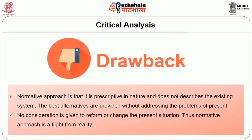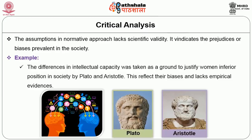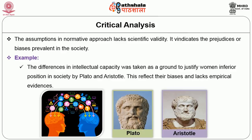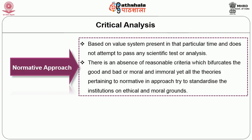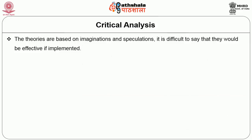The assumptions in the normative approach lack scientific validity. It vindicates the prejudices or biases prevalent in society. For example, differences in intellectual capacity were taken as grounds to justify women's inferior position by Plato, Aristotle and many others — reflecting their biases and lack of empirical evidence. Normative approach is based on a value system of a particular time and does not attempt to pass any scientific test. There is an absence of reasonable criteria which bifurcates the good and bad or moral and immoral, yet all normative theories try to standardize institutions on ethical and moral grounds. Since the theories are based on imagination and speculation, it is difficult to say they would be effective if implemented.